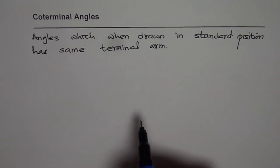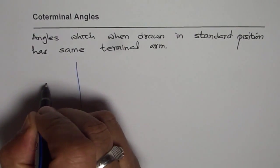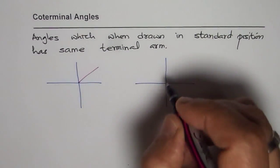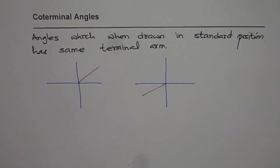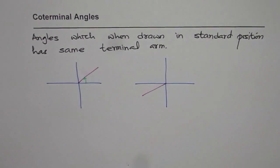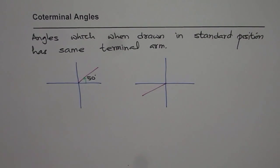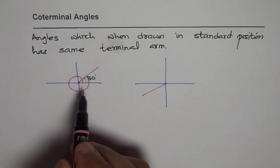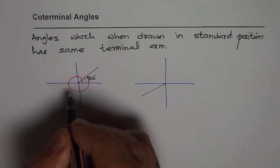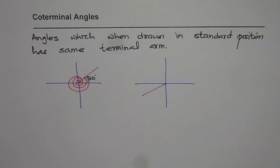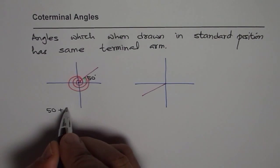The key question is: how can you get the same position of terminal arms? Let's consider one angle — say 50 degrees. If I have another angle with the same terminal arm, it could be one full circle plus 50, or even two circles. So angles like 50 plus 360 degrees would land on the same terminal arm.